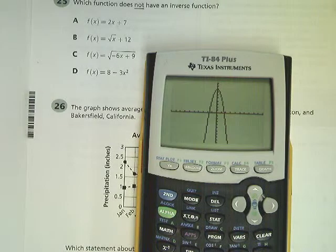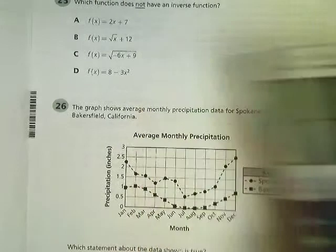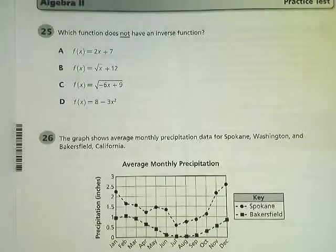When the original line fails the horizontal line test, because I'm talking about an inverse, that means that its inverse is not a function. So the answer to number 25 about which function does not have an inverse function is D.